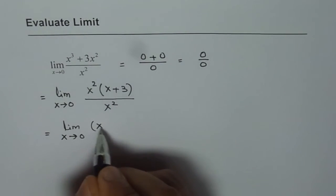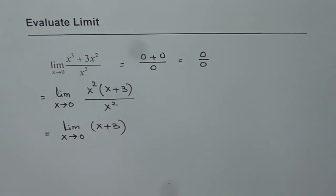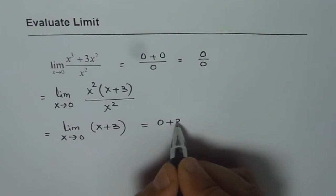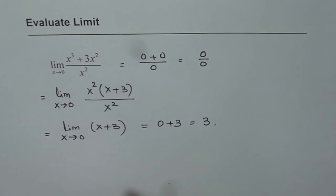We are left with x plus 3, right? Now we can substitute 0 here. So we get 0 plus 3, which is equal to 3.